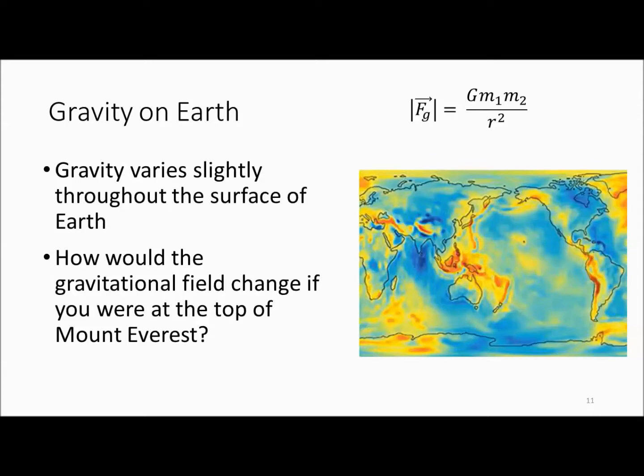So gravity will vary slightly throughout the surface of the earth, and you can see from this picture that, especially along the mountains, you'll have a smaller gravitational field in the red and orange areas. And as you get down to sea level, you'll have a larger gravitational field in the blue areas. So how would the gravitational field change if you were at the top of Mount Everest? It will be less.